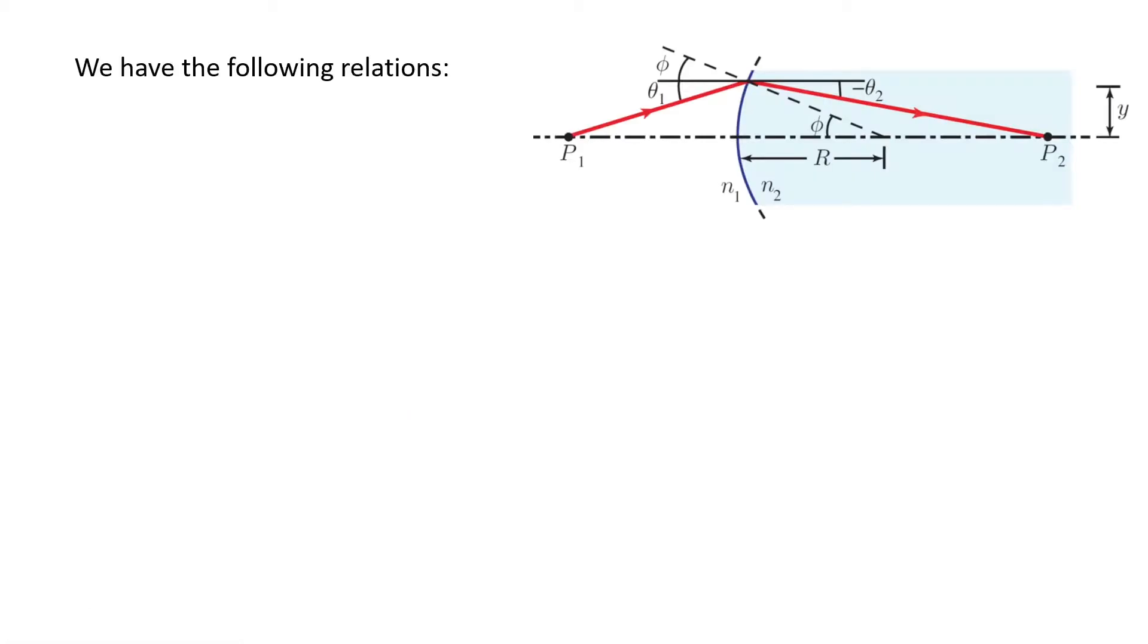Now, if we apply Snell's law, the incident angle is theta 1 plus phi, as you see here.